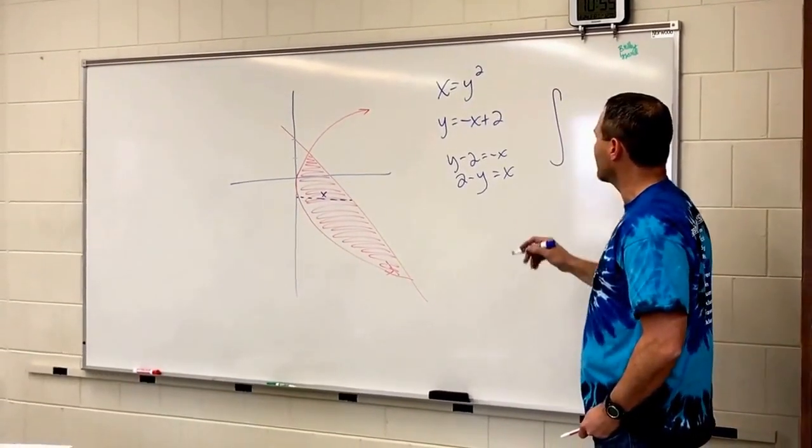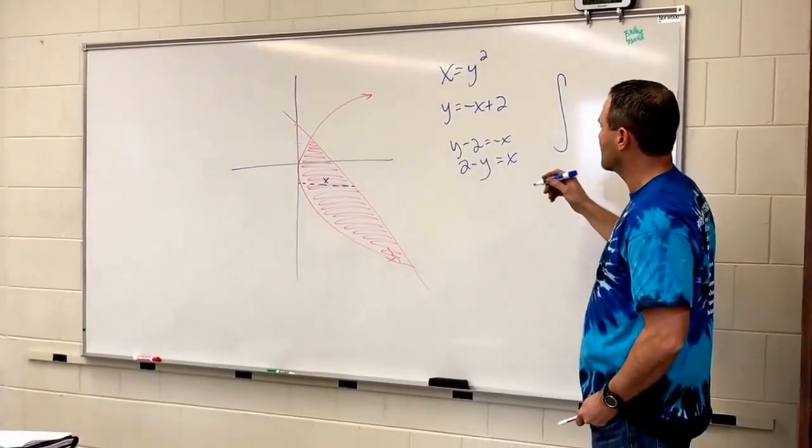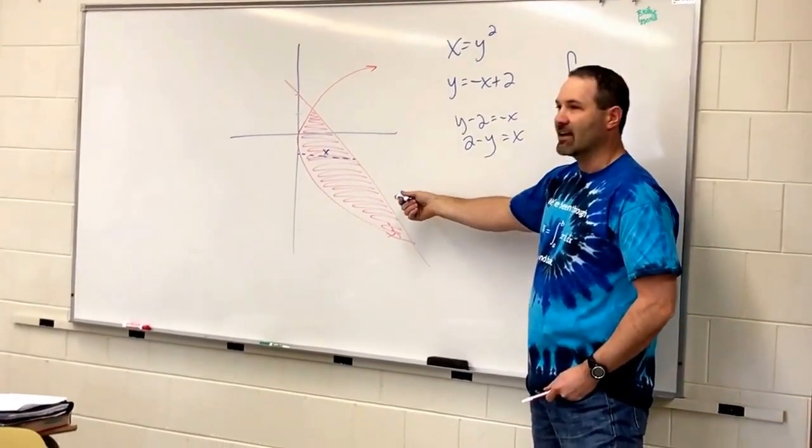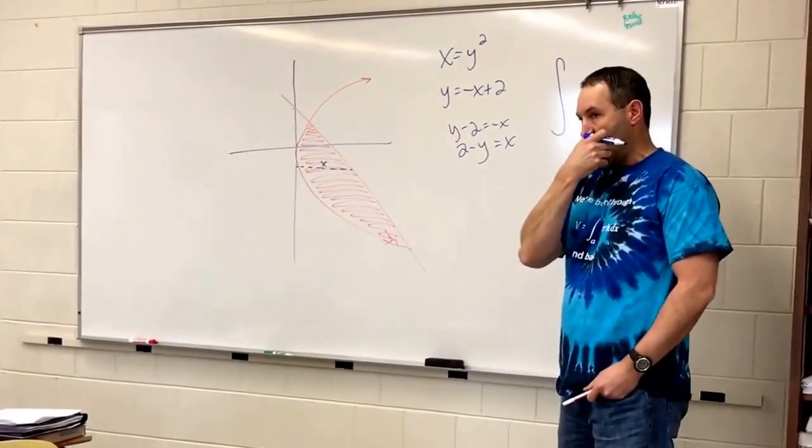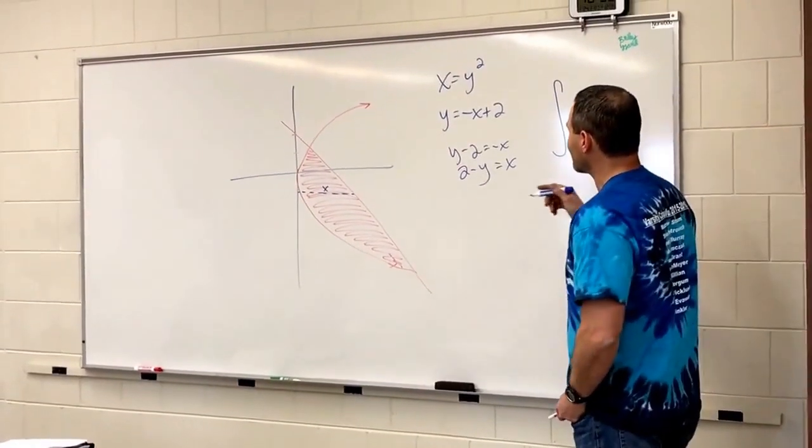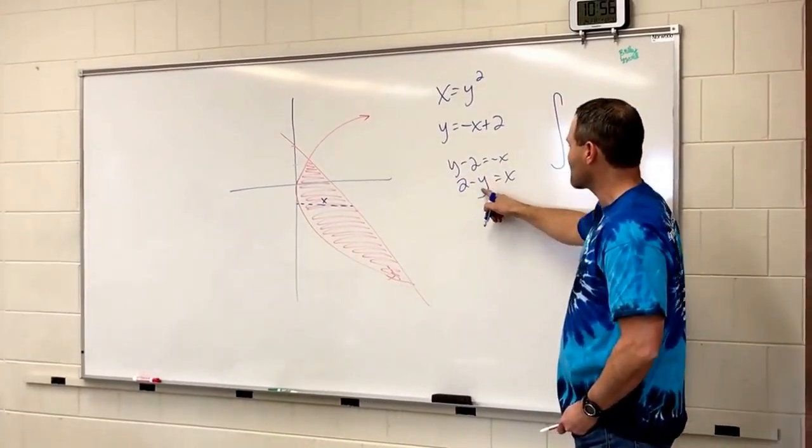So, x would be 2 minus y, and that one's already solved for x. So, we integrate right, which is the line, right? Right. So, the line, in terms of y, is...